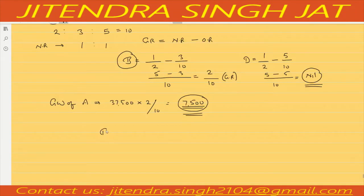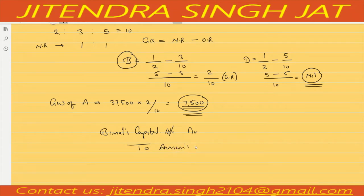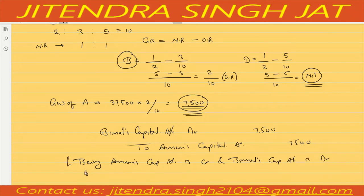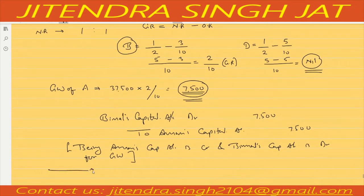So what entry do we pass? Bimal's capital account will be debited to Aman's capital account. Aman's capital account is credited and Bimal's capital account is debited for goodwill. I hope this question is clear to everyone.